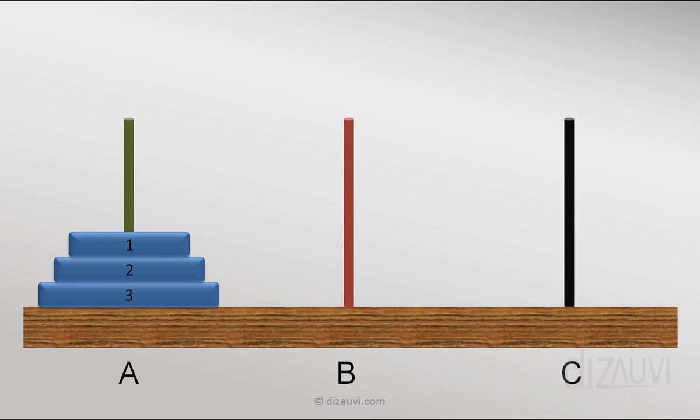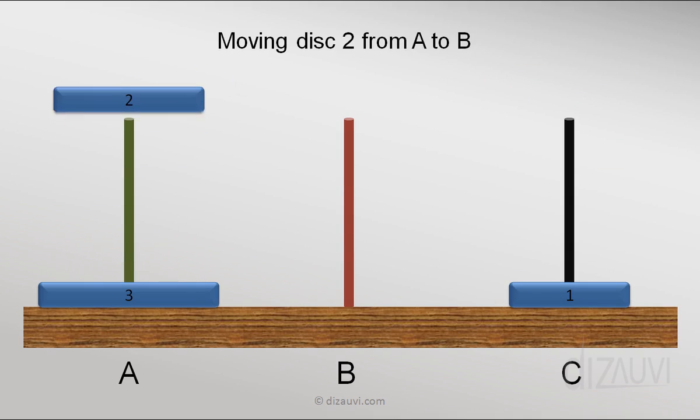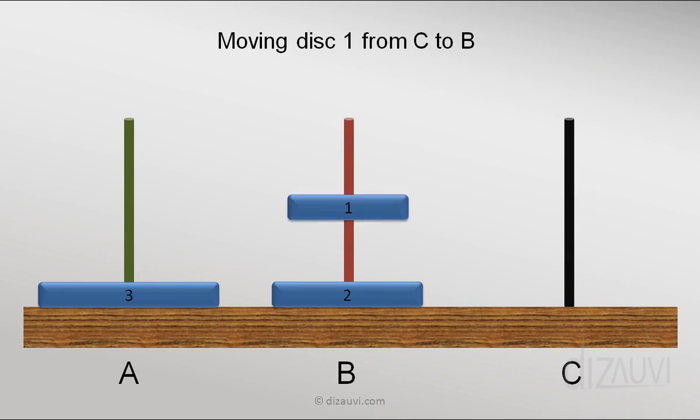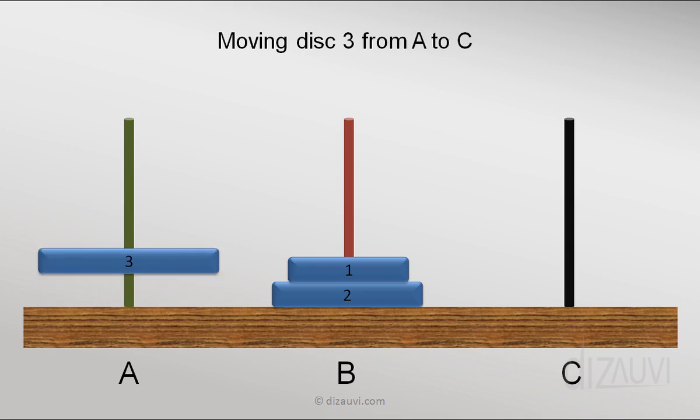So what we can do is that we move disk 1 to tower C from tower A. Then move disk 2 from A to B. Move disk 1 from C to B. Move disk 3 from A to C.